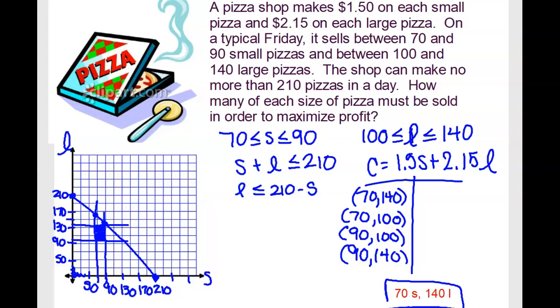Okay, 15. Your pizza shop makes $1.50 on each small and $2.15 on each large pizza. So that $1.50 and $2.15 is our profit or revenue. On a typical Friday, they sell between 70 and 90 small pizzas. So that's what's graphed right here, 70 and 90. They sell between 100 and 140 large pizzas. So graphed over here.